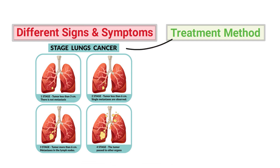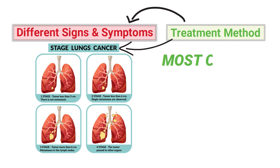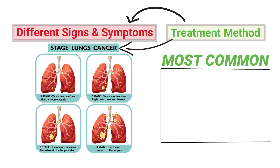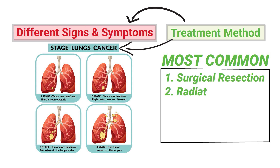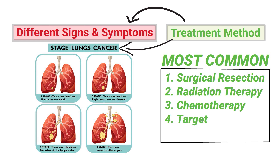The treatment method will vary from patient to patient depending on which stage they're in as well as their signs and symptoms. Some of the most common treatment methods include surgical resection, radiation therapy, chemotherapy, and targeted pharmacotherapy.